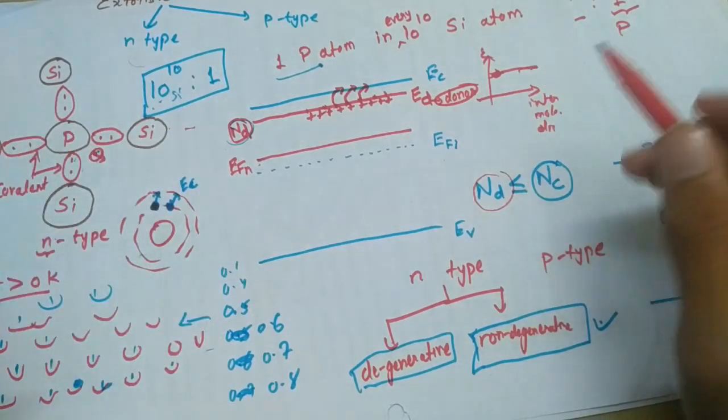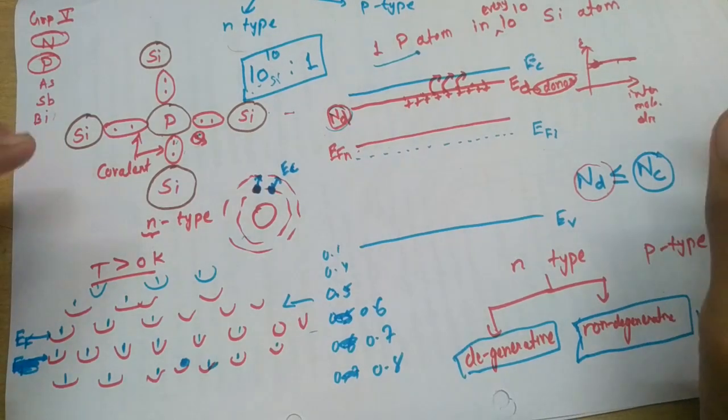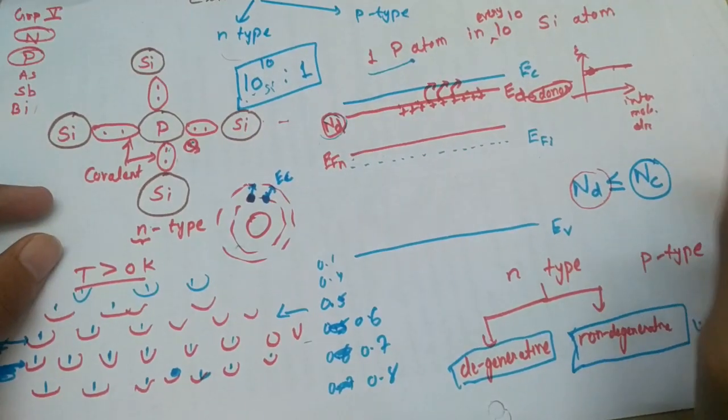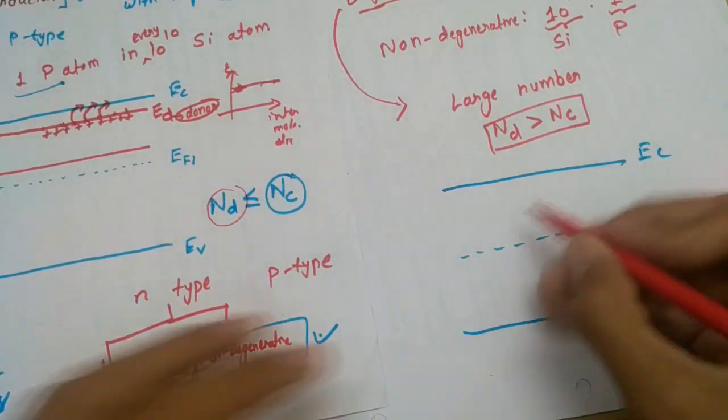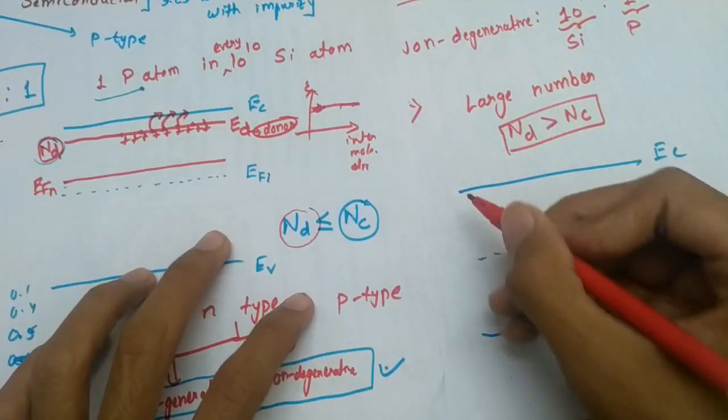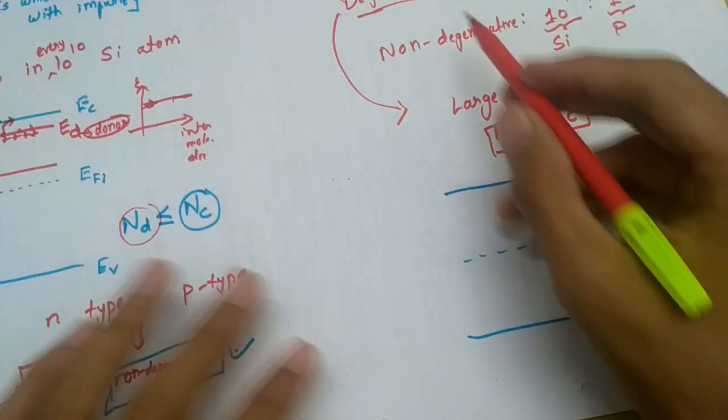We have added electrons in this proportion, but now we have added extra electrons, that is phosphorus atoms, in large number. Due to the large number of phosphorus atoms, that is electrons, this Fermi level which is here now will move towards conduction band.